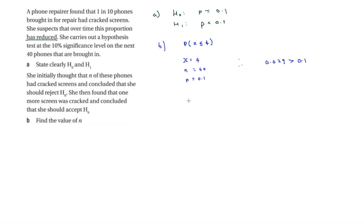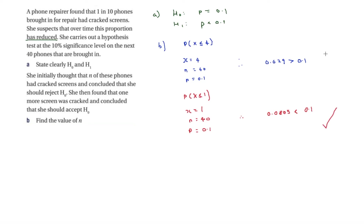We need to look at something a lot lower. Testing P(X ≤ 1): using x = 1, n = 40, p = 0.1, we get 0.0805, which is less than 0.1 — that could be our critical value.